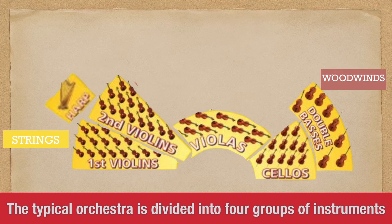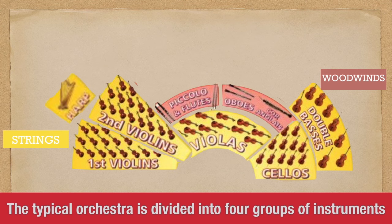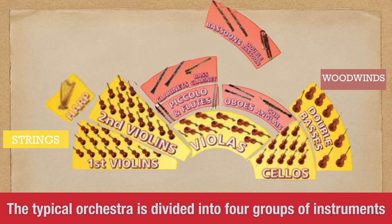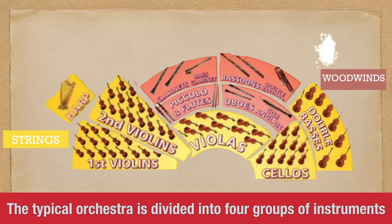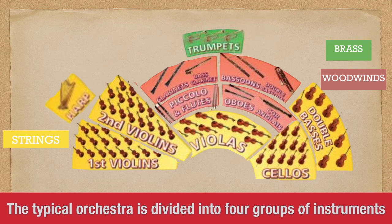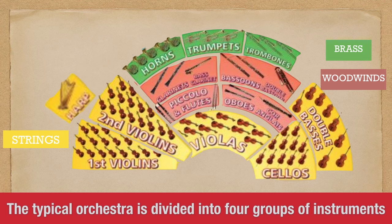The woodwinds family includes the piccolo and flutes, oboes and cor anglais, clarinets and bass clarinet, bassoon and double bassoon. The brass family consists of trumpets, horns, trombones, and tuba.